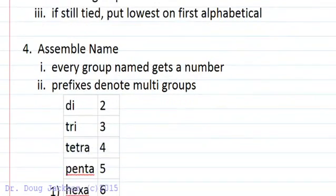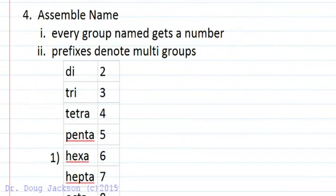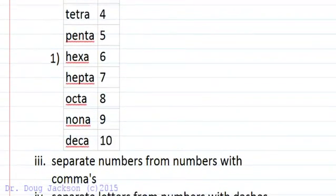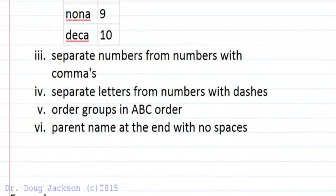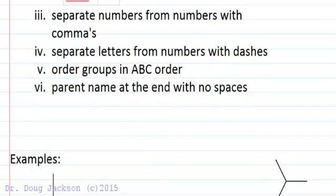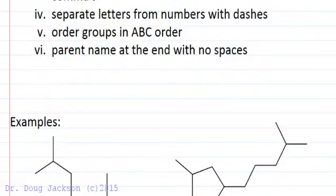The last thing we have to do is assemble the name. Every group that is named that intersects that circle has to get a number. We have multiple of the same groups, we use this set of prefixes: di, tri, tetra, penta, hexa, hepta, octa, nona, and deca. Separate numbers from numbers with commas, so if we have 1,2-dimethyl. Separate letters from numbers with dashes. Then we order the groups in alphabetical order in the name, not based on the number, based on the alphabetical order, and we don't number based on alphabetical order unless we reach that tiebreaker. Parent name goes at the end with no spaces.